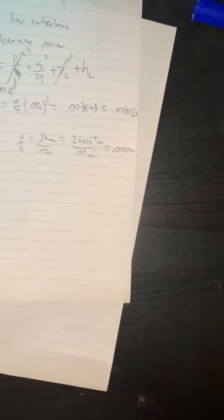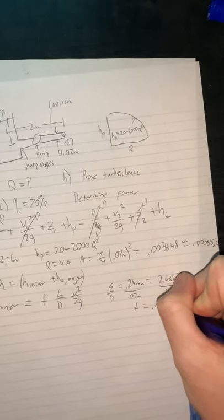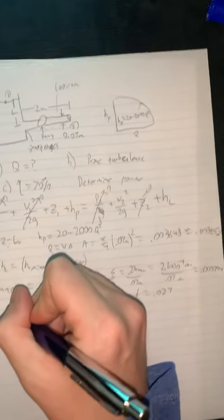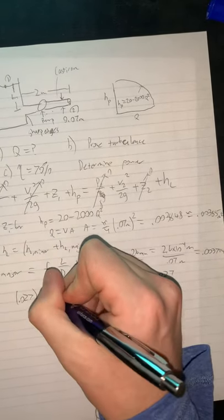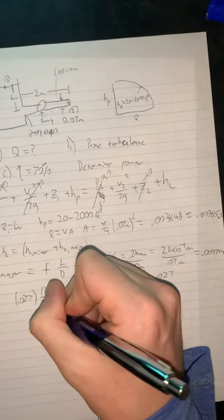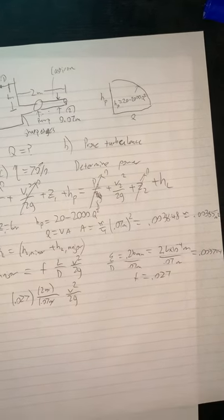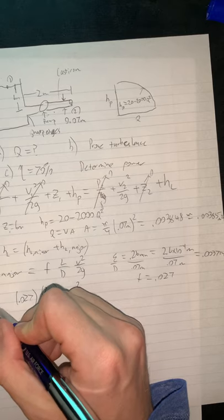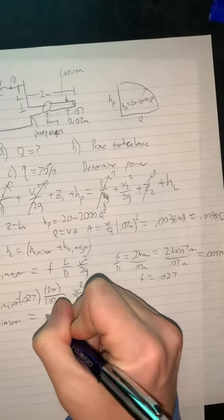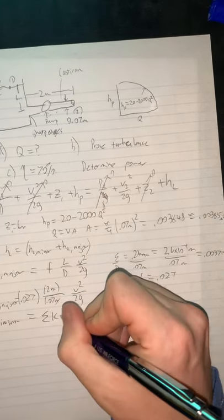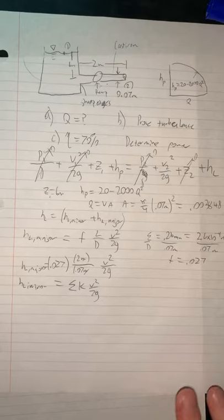We'll prove it later after we've solved this. So f equals 0.027. If we rewrite everything, we get 0.027 times 2 meters over 0.07 meters times V²/2g, and that is our head loss major. For our head loss minor, we know it's equal to the sum of our k values times V²/2g. We only have one k value, from our sharp edges. For sharp edges, k equals 0.5.